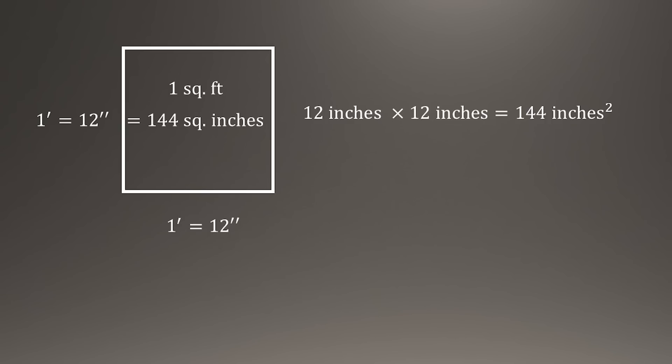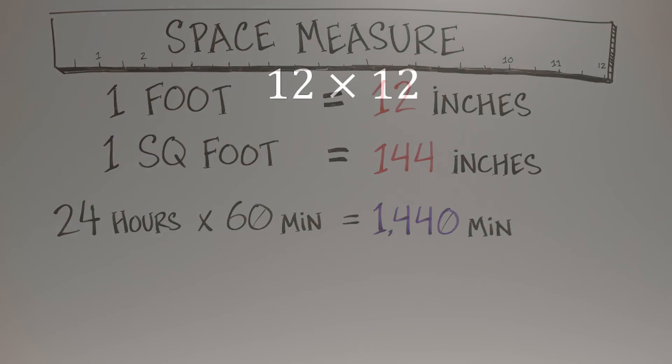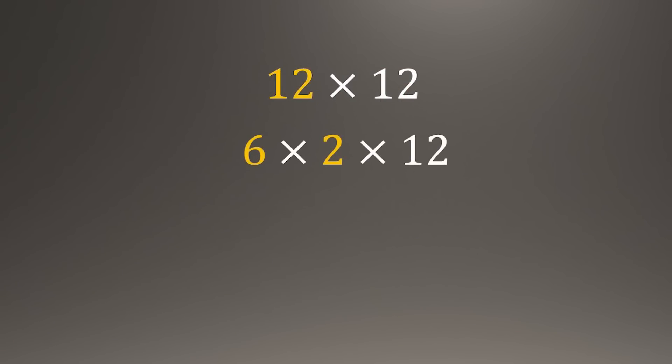A square foot becomes 12 times 12 equals 144 square inches. Oh yeah, square inches, not inches. Take 12 times 12, and that's 6 times 2 times 12, or 6 times 24. Obviously, it will be a factor of 10 less than 60 times 24. We see a similarity because we have arbitrarily chosen to use the same numbers.